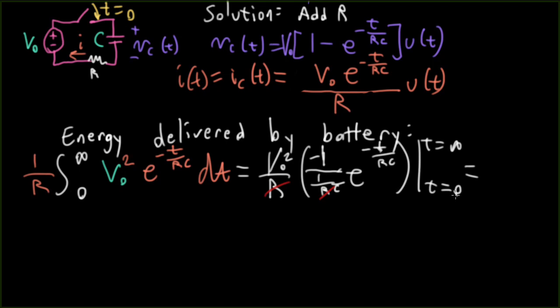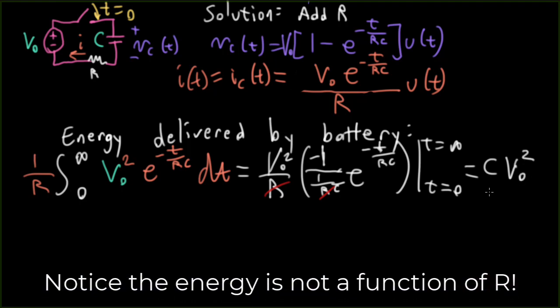So I'll have 1 over R with a V0 squared sitting in front. And then I'll have E to the minus T over RC. And then, in front here, I'll have something like 1 over 1 over RC. And then, I need a minus sign. And then, I'm evaluating this at T equals 0 and T equal infinity. So the R's here cancel. And when I plug in infinity, I get 0. And when I plug in 0 for the lower limit, I wind up with just 1. So moving the C up here, I'll have C V0 squared. And interestingly, this is the same energy delivered by the battery that we just computed for the naive case where we didn't have any resistance here.